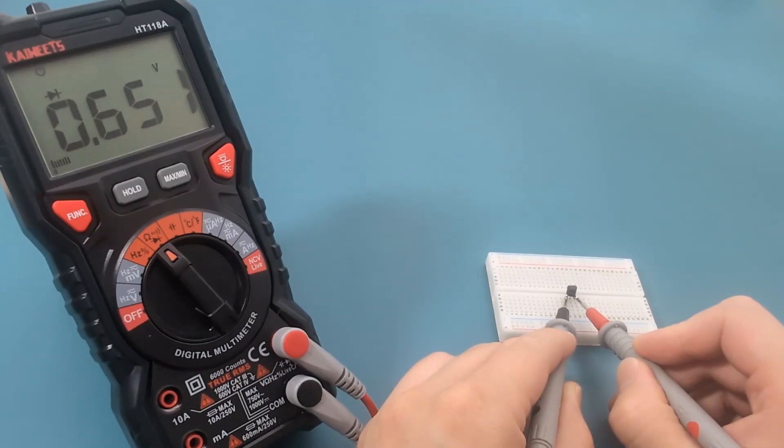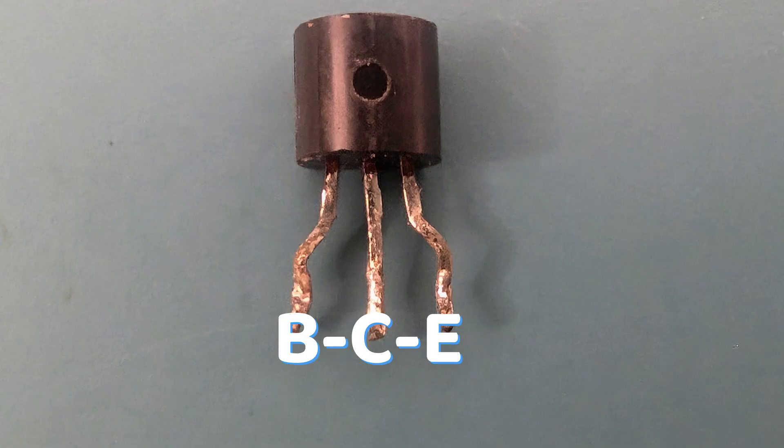The first and third wires have a voltage drop of around 652 millivolts. The emitter has the highest voltage drop so that's the third wire. The second wire is the collector and the first wire is the base.